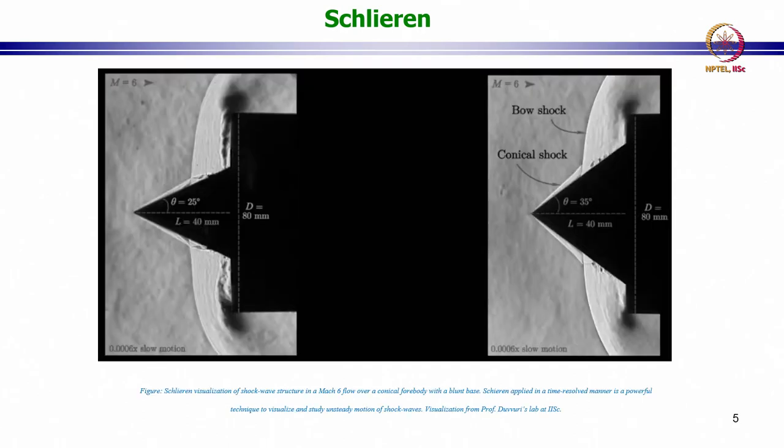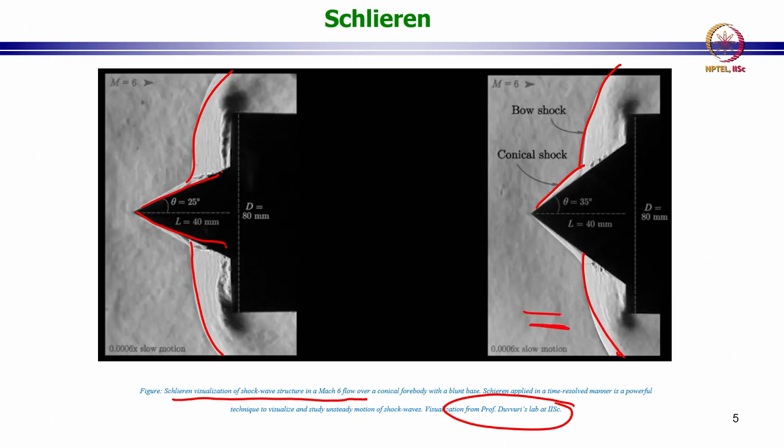This is an example - not the example that you will see in the lab demonstration, which is why I wanted to show you this. This is a Schlieren visualization of a shock wave in hypersonic flow over a conical body with a blunt base. This visualization comes from Professor Dhuvuri Subramaniam's lab at IISc in the aerospace department. You can see this shock wave formation and the bow shock very clearly in the two cases. There is a difference in the grayscale images in this background versus the grayscale here, so the shock wave formation is very clearly seen.